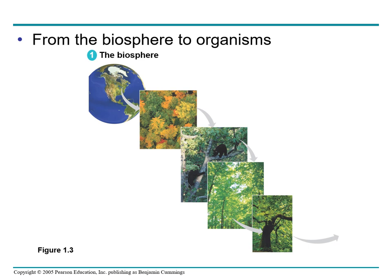After the biosphere, we have the ecosystem. An ecosystem consists of all the living things in a particular area along with all the non-living components of the environment with which life interacts, such as soil, water, atmospheric gases, and light. Coming down in the hierarchy, we have communities. The array of organisms inhabiting a particular ecosystem is called a biological community. The community in our meadow ecosystem includes many kinds of plants, various animals, mushrooms and other fungi, and enormous numbers of diverse microorganisms such as bacteria, which are too small to see with the naked eye.